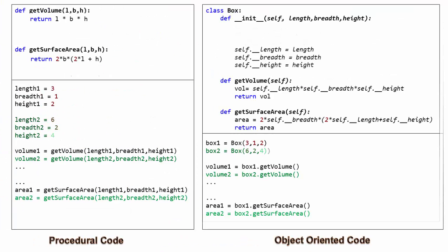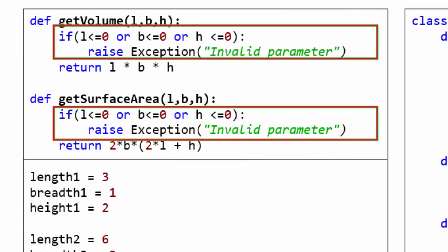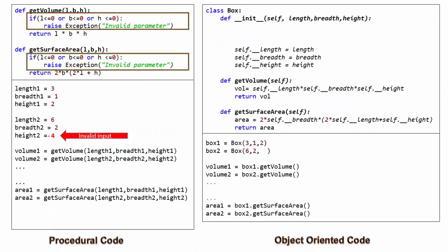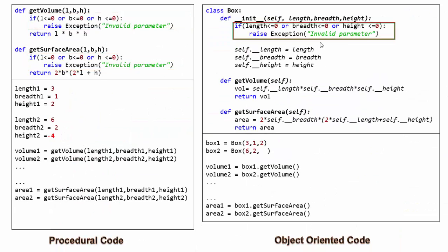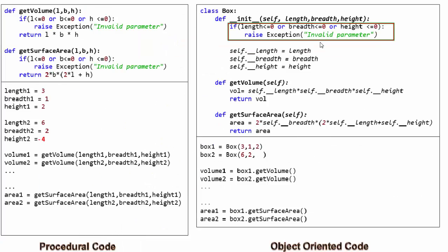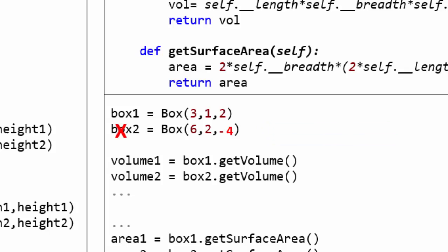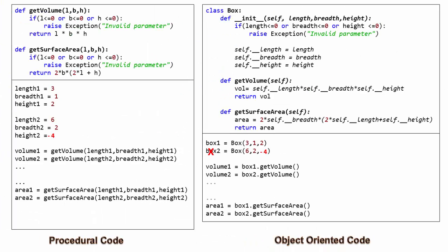Now, let us see how both the approaches handle invalid inputs. In procedural code, we need to provide exception handling for each function. The object-oriented code, on other hand, validates the data at the time of initialization itself. If invalid input is provided, an exception is thrown and the instance itself is not created. Thus, preventing the problem at entry level makes the code more robust.